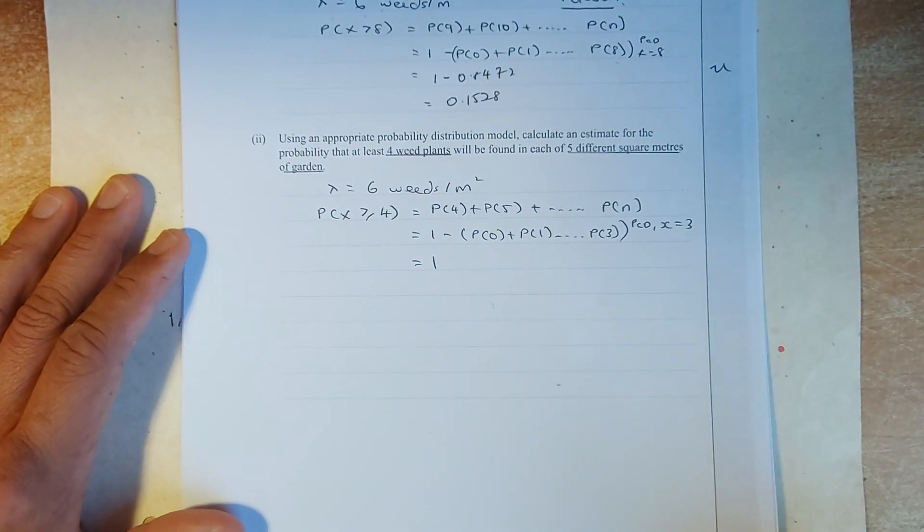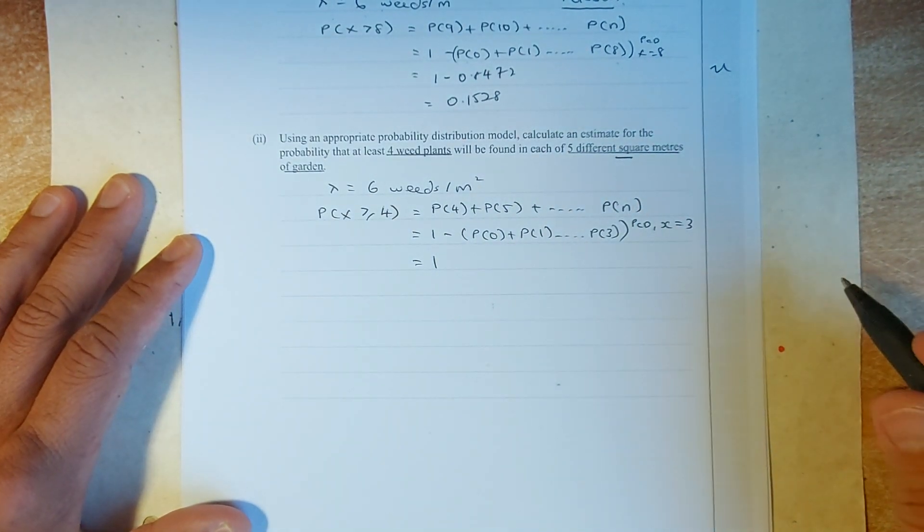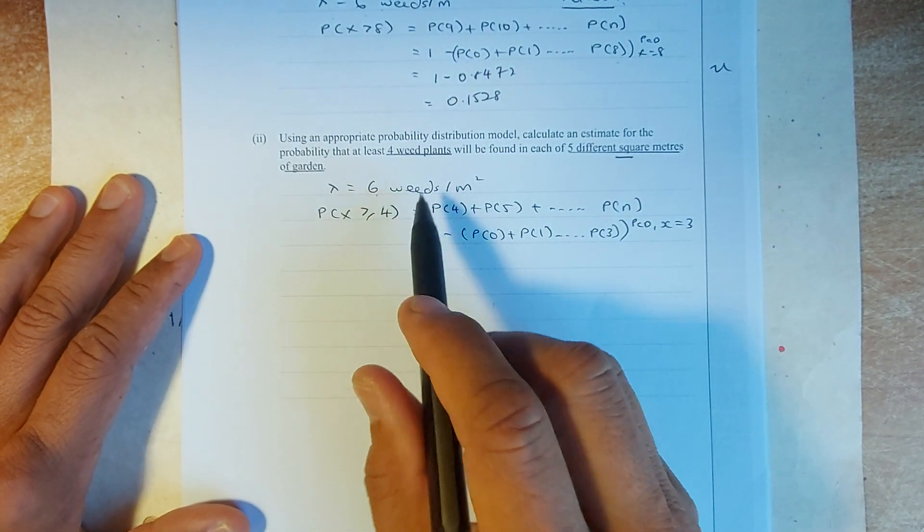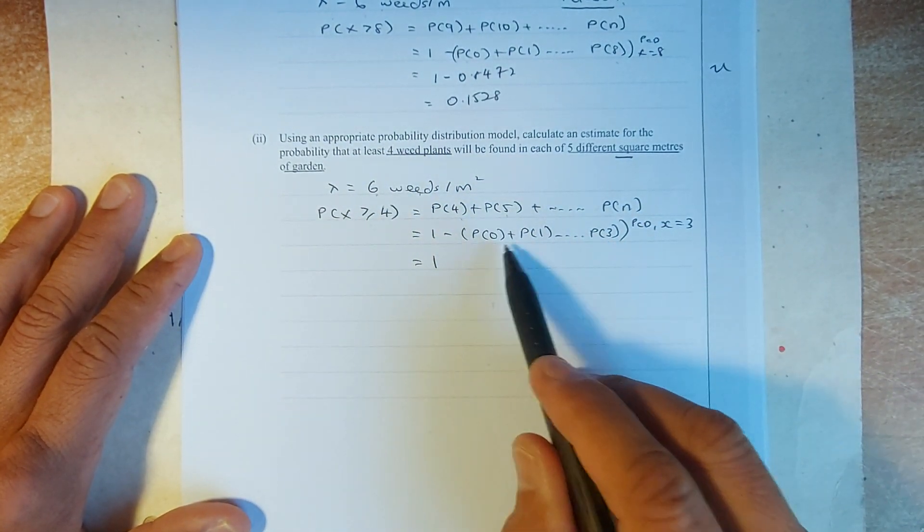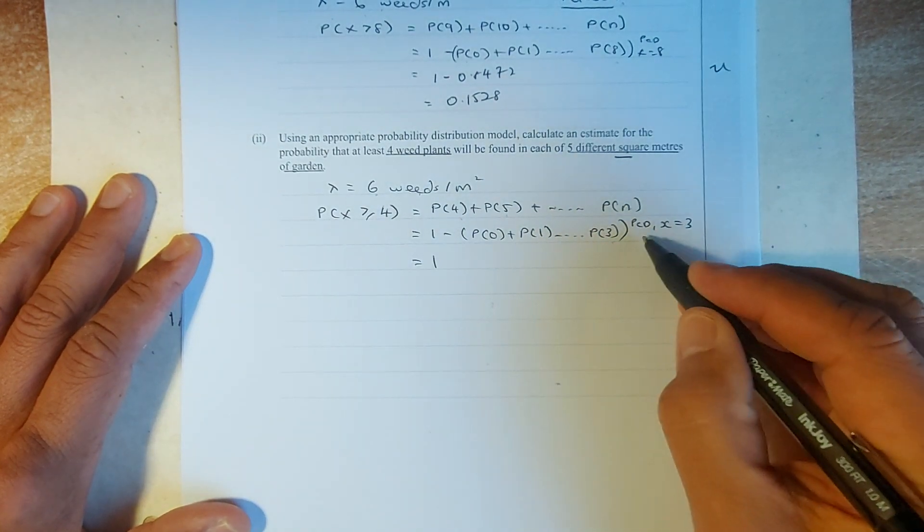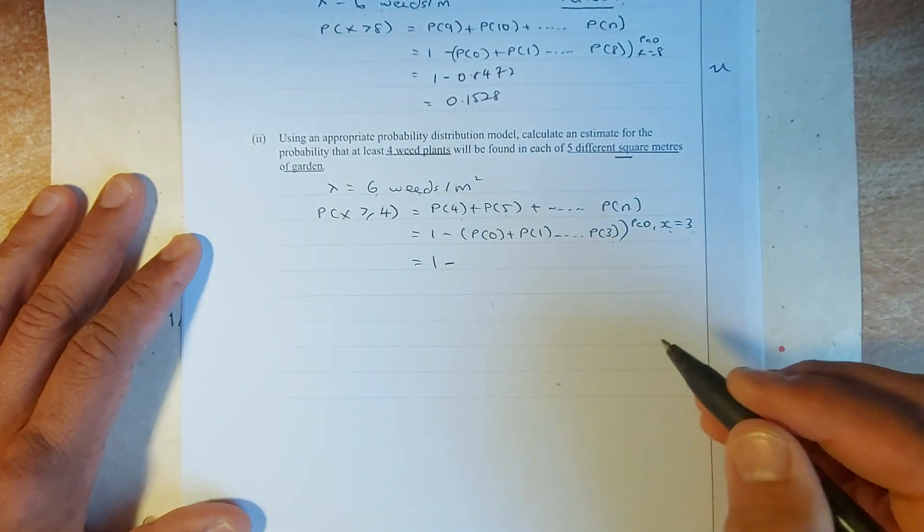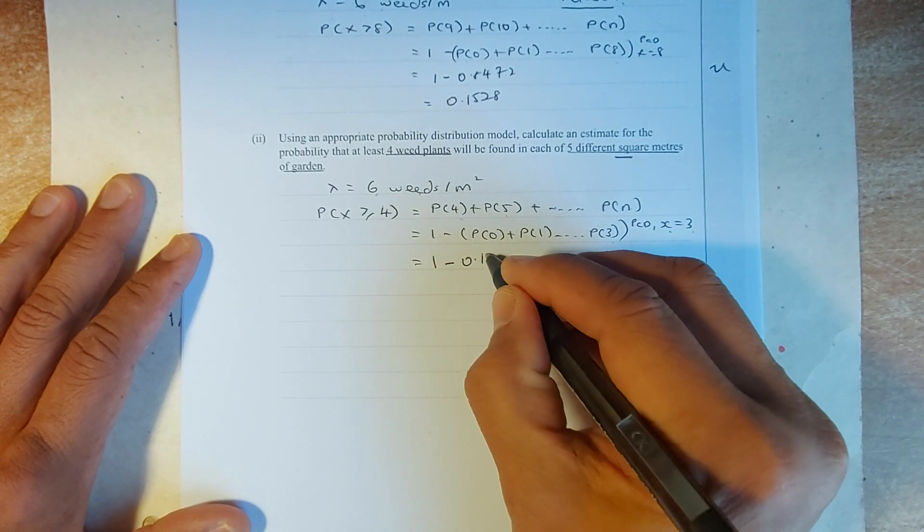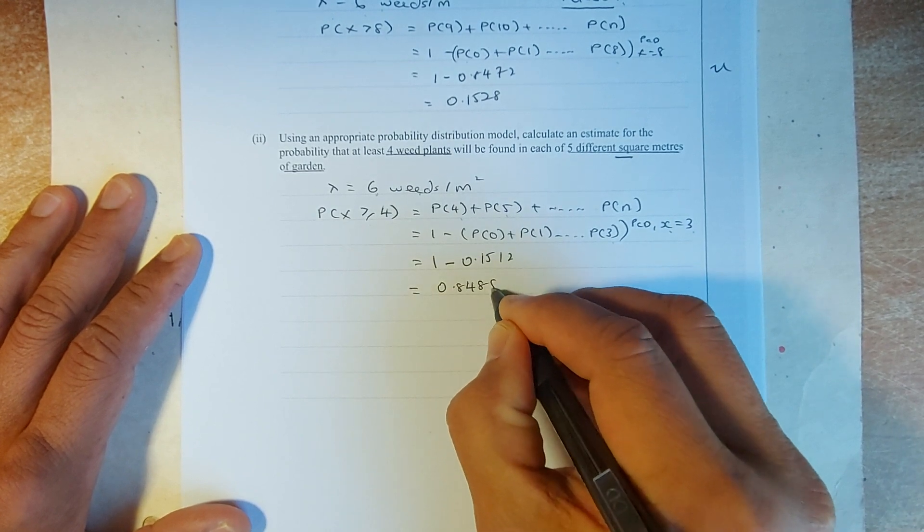They ask you, what is the probability on 5 different square meters? Okay. So, when they have 5 different square meters. So, you need to calculate the lambda is still 6. Okay. They want to get at least 4. So, it must be 4, 5, 6, 7. So, you take 1 minus 0 to 3. Put in your calculator. Lambda is still 6. x is 3. Calculate. Put in your calculator. And the answer is 1 minus 0.1512. And the answer is going to be 0.8488. And that will get achieved.